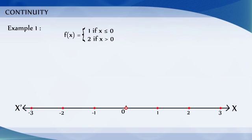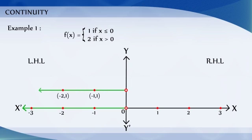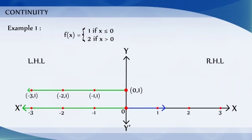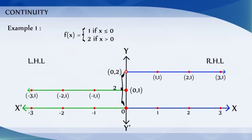Let us sketch the graph of the given function. For all the x values less than 0, the graph of the given function is a straight line parallel to the x-axis at a distance of 1 unit from the origin. And when x is equal to 0, f of x is equal to 1. For all the x values greater than 0, the graph is a straight line parallel to the x-axis at a distance of 2 units from the origin.